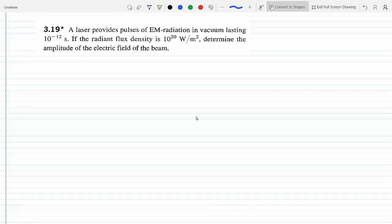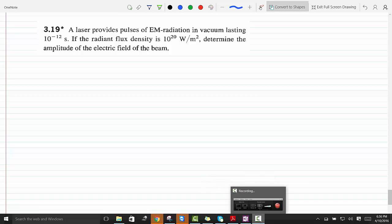So a laser provides pulses of electromagnetic radiation in a vacuum lasting 10 to the minus 19 seconds. We are given the radiant flux density 10 to the 20 watts per meter squared. Determine the amplitude of the electric field of the beam.